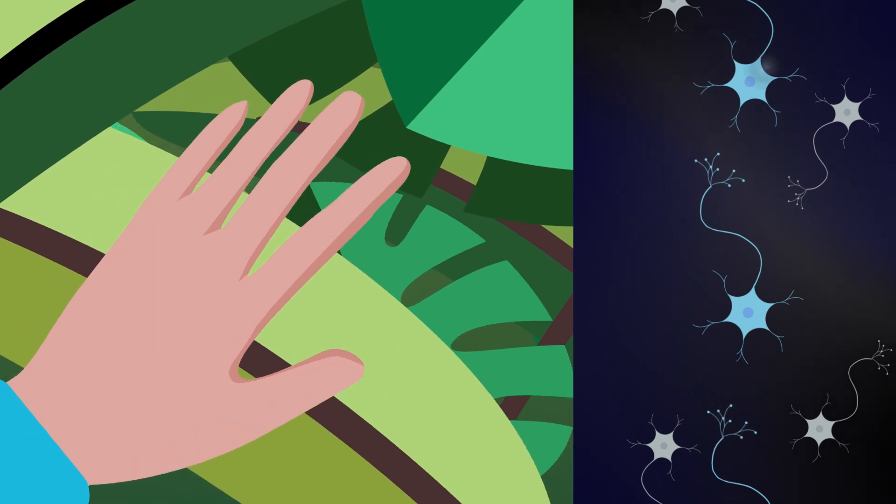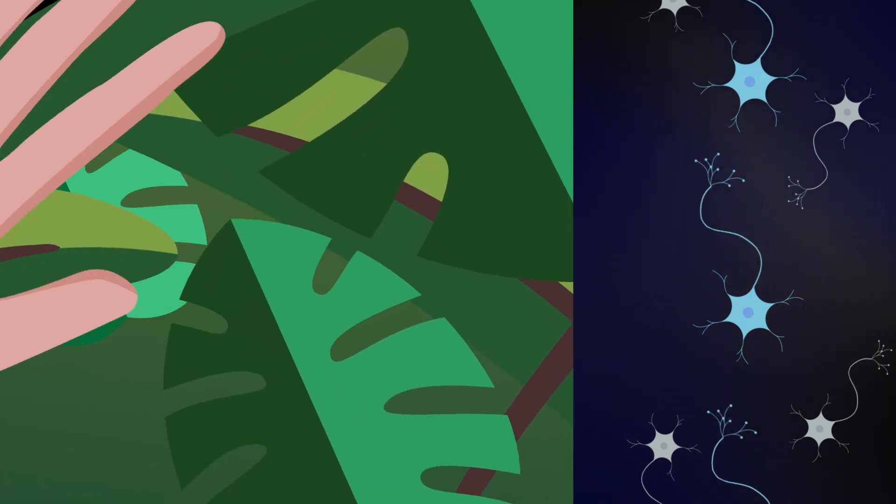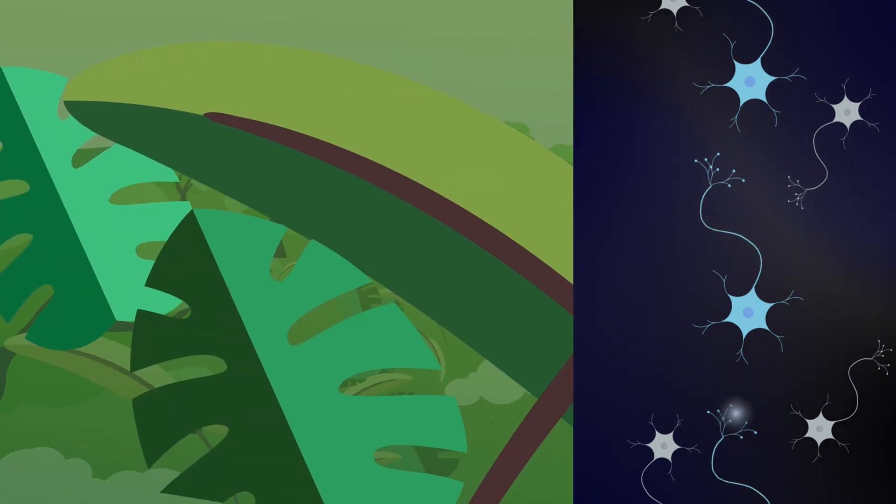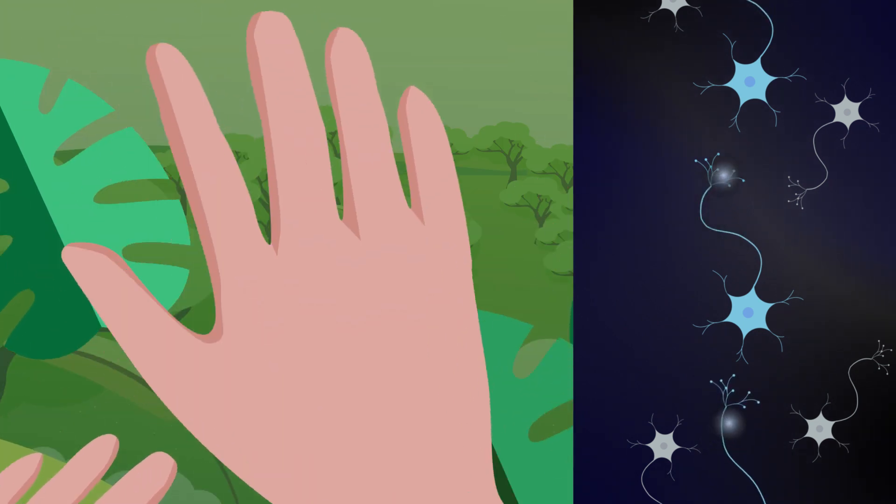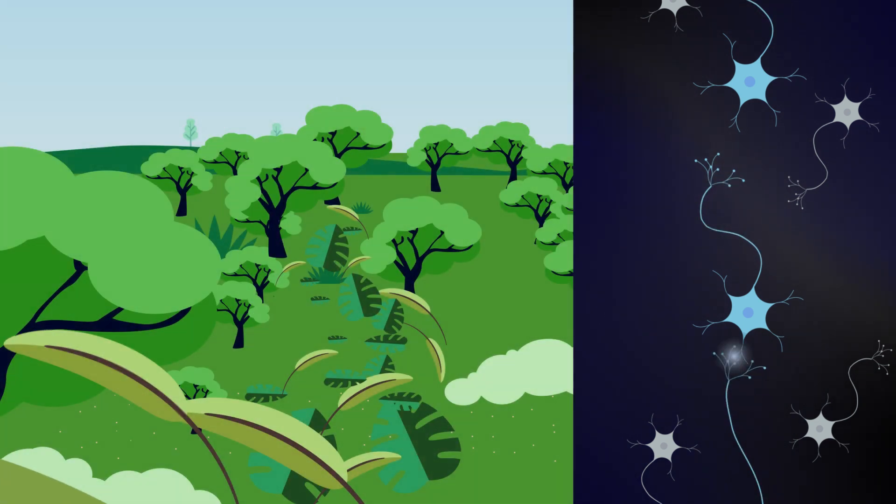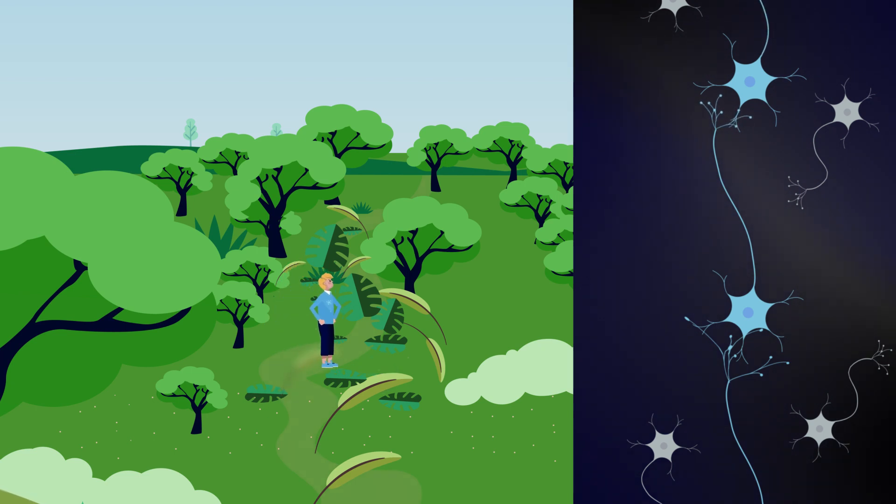It's the same thing for the connections between your neurons. The more you use the connections associated to a specific learning task, the stronger they get. This is what makes them more efficient and easier to use. This is when a task becomes easier and how you improve.